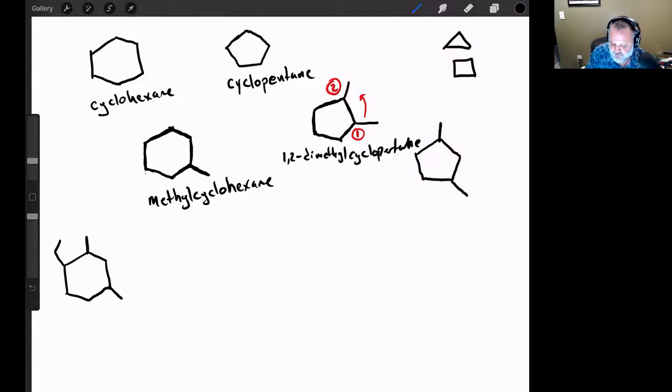All right, what about the other one? Well, the same thing is going to apply. If I pick one of them and start off with one and I go one, two, three, that's more appropriate than going the other direction and having one, two, three, four as my choice. So it's not one-four-dimethylcyclohexane, it's one-three-dimethylcyclohexane. And again, it's not hexane, it's pentane.